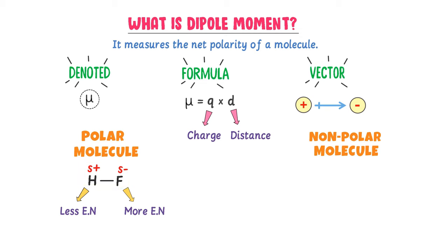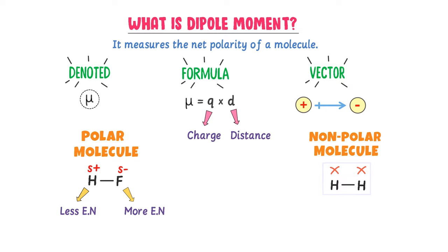On the other hand, consider a molecule of hydrogen gas. We can see that it has no positive pole and it has no negative pole. So it is a non-polar molecule.